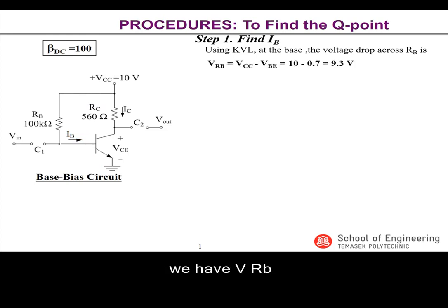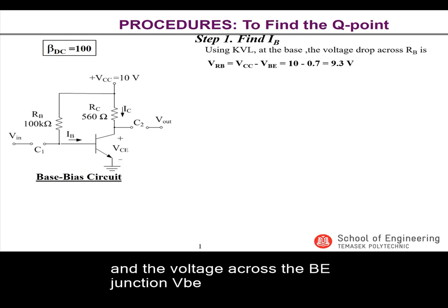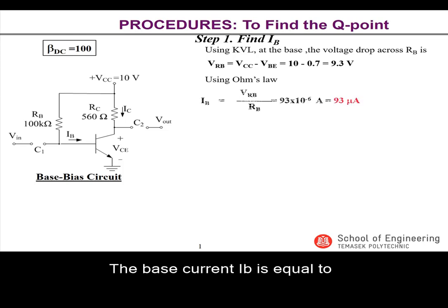Rearranging the KVL equation, we have VRB, the voltage across the base resistor, being equal to the difference between the supply voltage VCC and the voltage across the BE junction VBE. Using Ohm's law, the base current IB is equal to the division of VRB by the resistance of RB, which gives an answer of 93 microamperes.